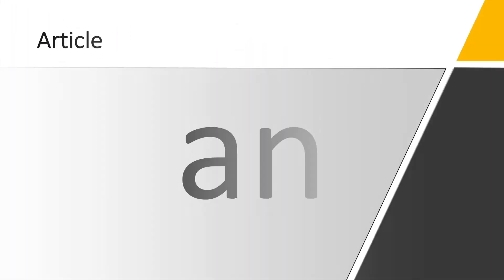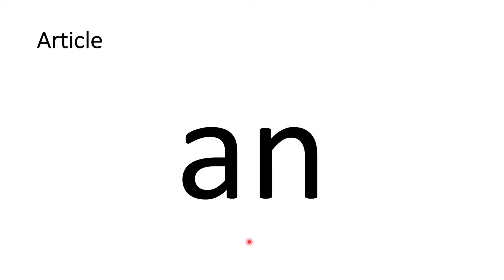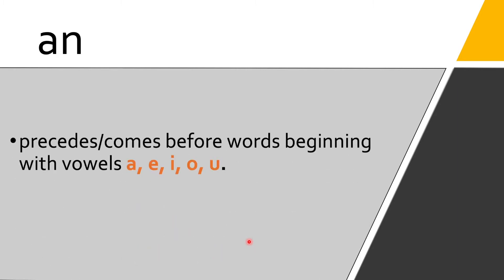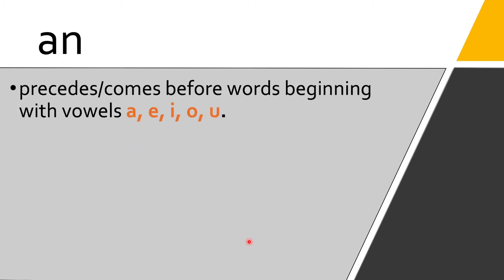Now we have the article 'an.' So let's have the article 'an.' When do we use 'an'? It precedes or comes before words beginning with vowels: A, E, I, O, U.